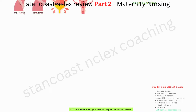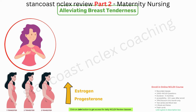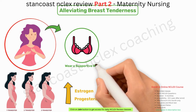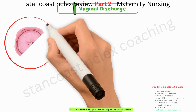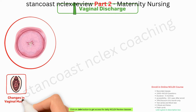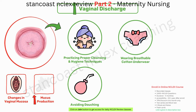Breast tenderness can arise in any trimester due to elevated estrogen and progesterone levels. Pregnant individuals are encouraged to wear a supportive bra and avoid using soap on the nipples and areola area to prevent skin dryness. Increased vaginal discharge throughout pregnancy is driven by changes in vaginal mucosa and increased mucus production. Managing this involves proper cleansing and hygiene, wearing breathable cotton underwear, avoiding douching, and consulting with the healthcare provider if an infection is suspected.